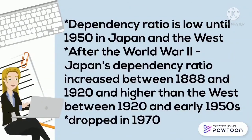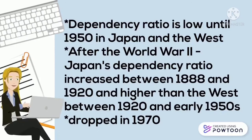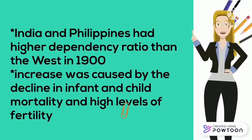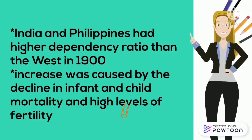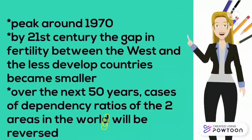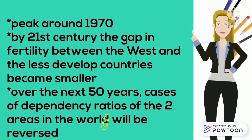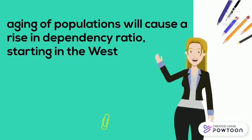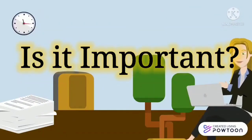The dependency ratio was low until 1915 in Japan and in the West. After WWII, Japan's dependency ratio increased between 1888 and 1920, and was higher than the West between 1920 and the early 1930s, then dropped in 1970. India and the Philippines had a higher dependency ratio than the West in the 1990s. The increase was caused by the decline in infant and child mortality and higher levels of fertility since around 1970. By the 21st century, the gap in fertility between the West and the less developed countries became smaller. Over the next 50 years, the dependency ratios of the two areas will be reversed. Aging populations will cause a rise in the dependency ratio, starting in the West.